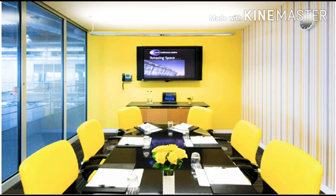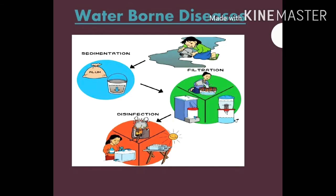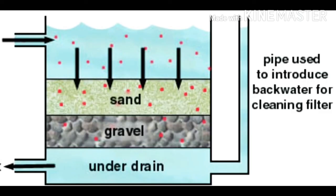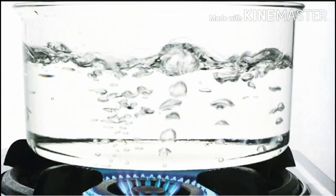The next general way is prevention of diseases which spread through water. For this, drinking water must be treated before use — meaning we should always consume filtered or boiled water. This will reduce the cases of waterborne diseases.